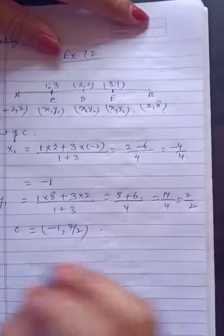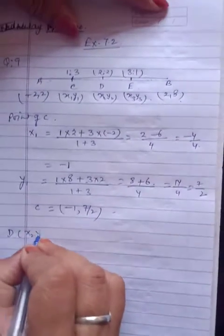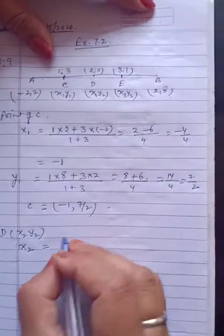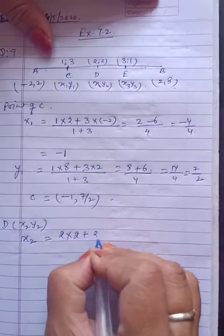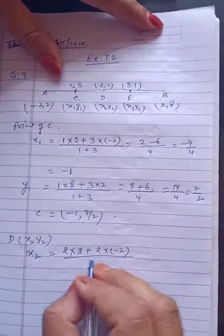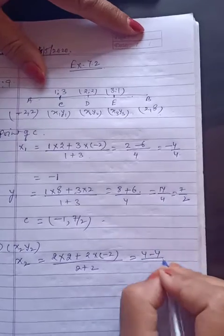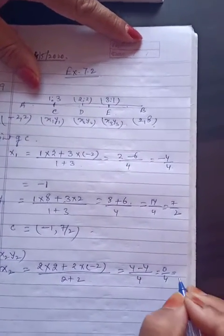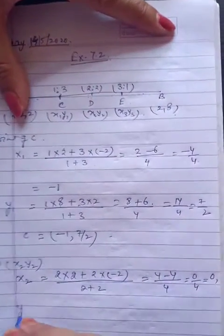Now again we have to find out the point of D. D के X2, Y2 हैं। Same वोई करिए - X2 का formula, ratio 2:2 है: 2 into 2 plus 2 into minus 2, divided by 2 plus 2. Then 4 minus 4 upon 4 = 0 by 4. So X2 = 0.